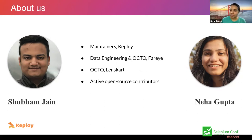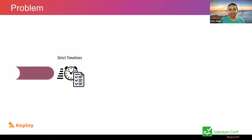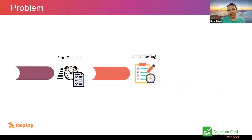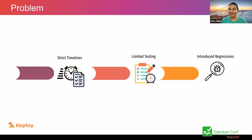The team was very small, meant to experiment with new technology and new features. One thing that was very limited was time — we had very strict timelines. Because of those timelines we were only able to do very limited testing, maybe a couple of happy flows. We wanted to do functional testing more, but with that limited testing there were regressions introduced.